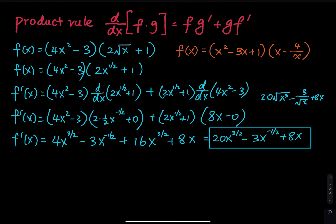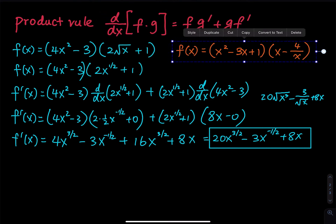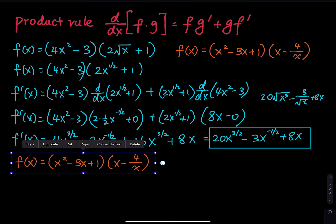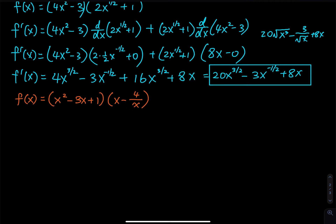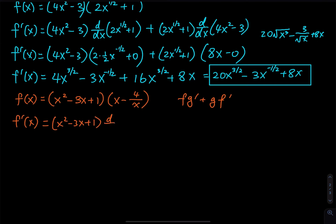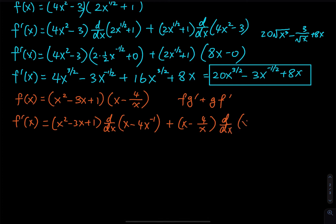The next function is in orange. Using copy and paste, what's the product rule again? The product rule is fg prime plus gf prime. So: we copy f, which is x squared minus 3x plus 1, and then take the derivative of the second factor, x minus 4 times x to the negative 1. Then plus x minus 4 divided by x, times f prime — the derivative of the first factor.